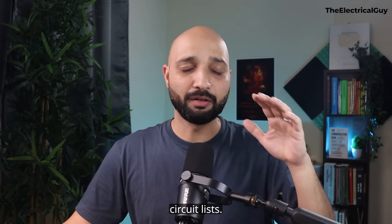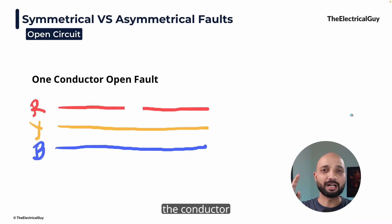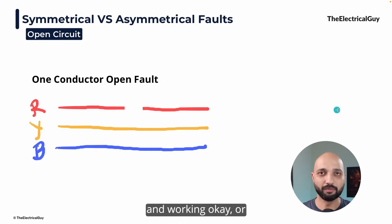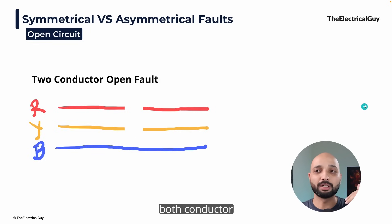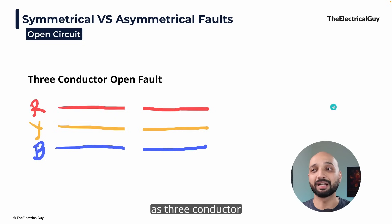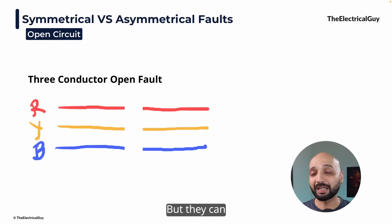Let us first start with the open circuit. In open circuit, the conductor will be broken down or cut for some reason and no current is flowing. There could be a one conductor open fault, where one conductor is open and the other two are perfectly fine. Or there is the possibility that two conductors from the three are broken down. Or maybe all three conductors are in the open circuit condition — that is called a three conductor open fault. These faults are not very severe in the power system and you will not see very serious consequences from them.